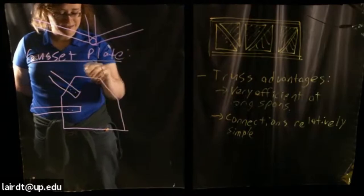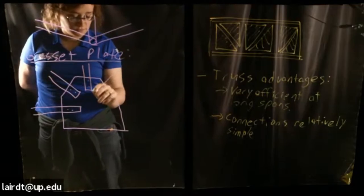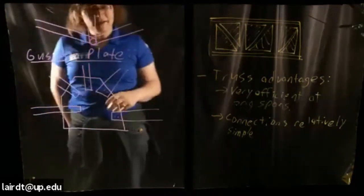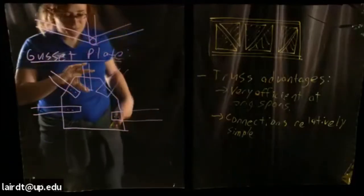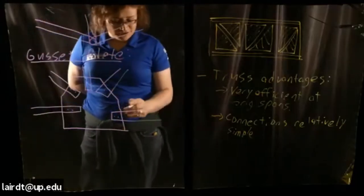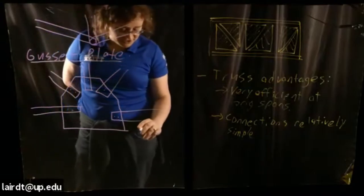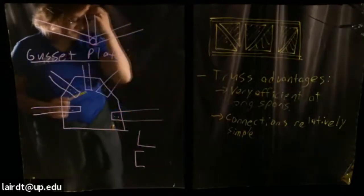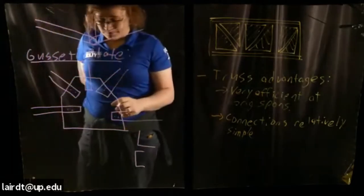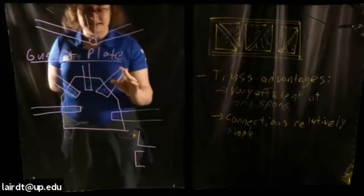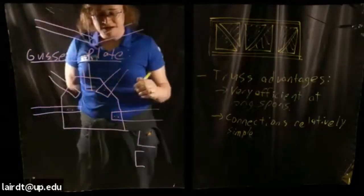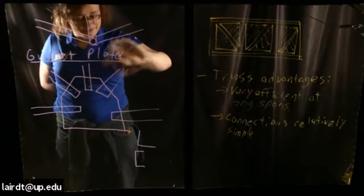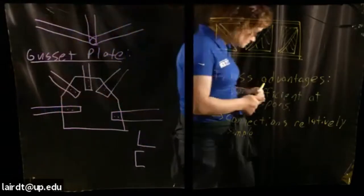Rather than literal pins, what you'll have is something known as a gusset plate — generally just a big plate of steel. You'll have elements framing into this plate and connected by a couple of bolts. The elements themselves will be relatively simple — sometimes W sections, but often L shapes or C shapes. The connections are relatively simple: the gusset plate is pre-cut, maybe on a plasma cutter or water jet in the factory, then you drill a couple holes, bolt it on, and you're done.